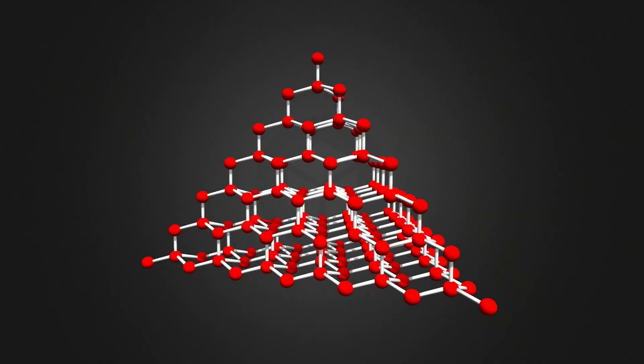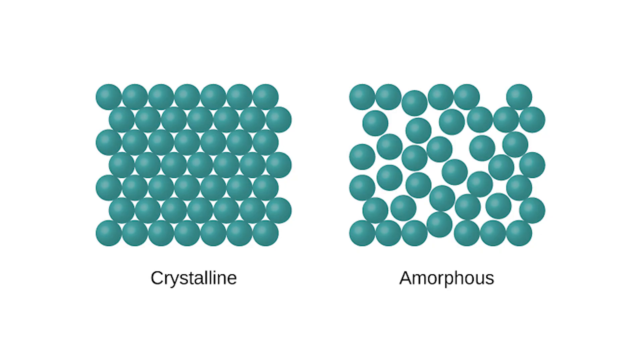Most gemstones are very hard and crystalline materials, so they have this repeating crystal lattice structure in how their atoms are arranged. This is in contrast to something like glass — an amorphous solid — which doesn't have a lattice or any kind of repeating arrangement of its atoms. It's this crystal structure that is responsible for a lot of these unique optical properties in gemstones.